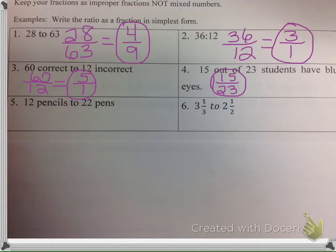Number 5: you have 12 pencils to 22 pens. That would be 12 over 22, which simplifies to 6 over 11, because 2 goes into both of them. Pretty simple.